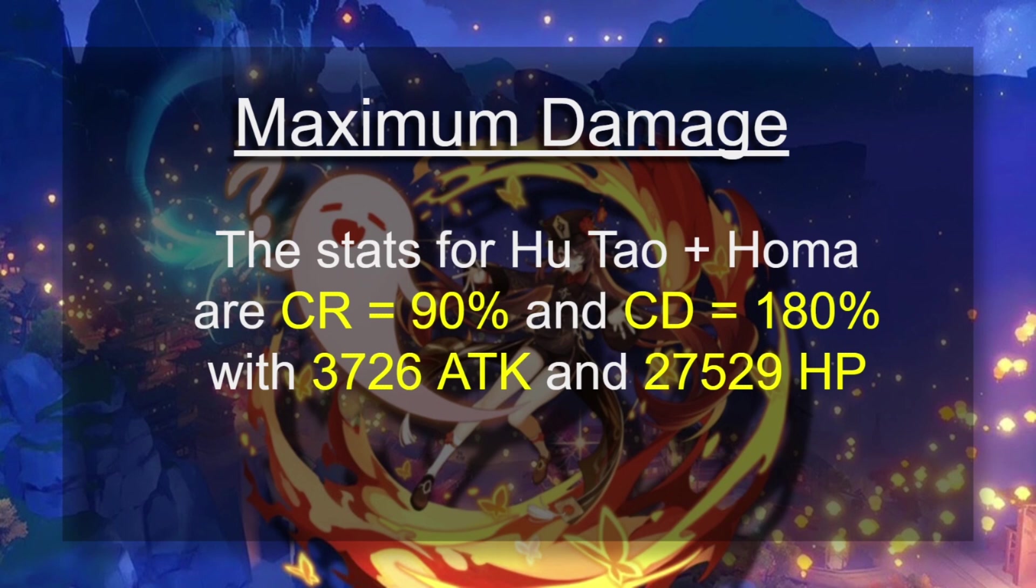For maximum damage for basically realistic rolls, which we're going to talk about, you're aiming for something like 90% crit rate, 180% crit damage, and this will result during your E skill for you to have something like 3,726 attack and 27,000 HP.